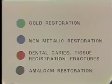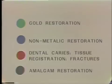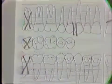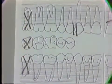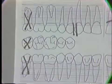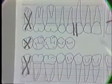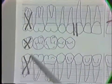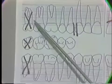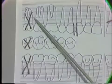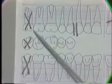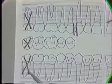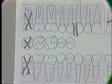In addition to the color coding, a series of symbols are used to indicate other findings in the oral cavity. To indicate a missing tooth, a gray or black penciled X is placed over all surfaces of the tooth on the chart.